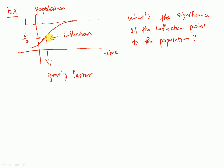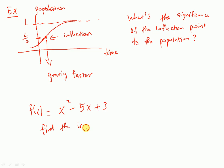If you watch this video, I give you an opportunity to get one point of extra credit. Email me with your answer. The function is f of x equals x squared minus 5x plus 3. Find the inflection point. Email me with your answer and explanation of why you got your answer, and I'll give you one point added to your midterm score.